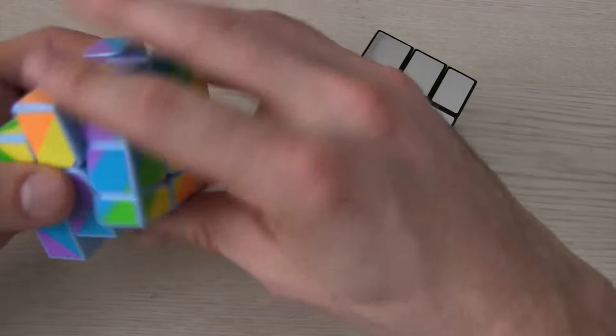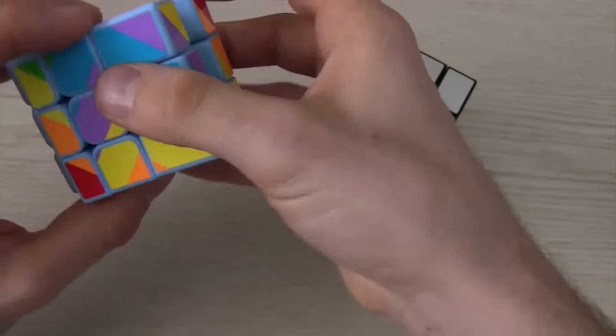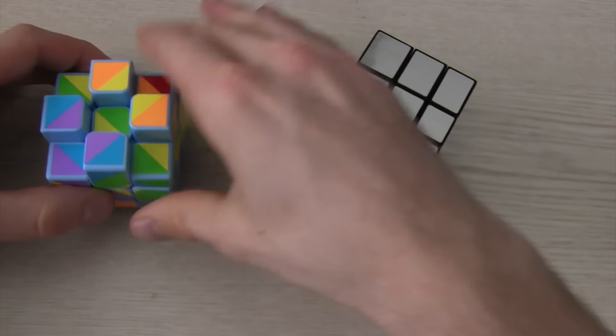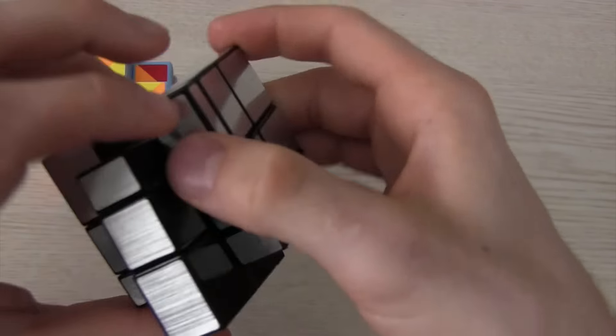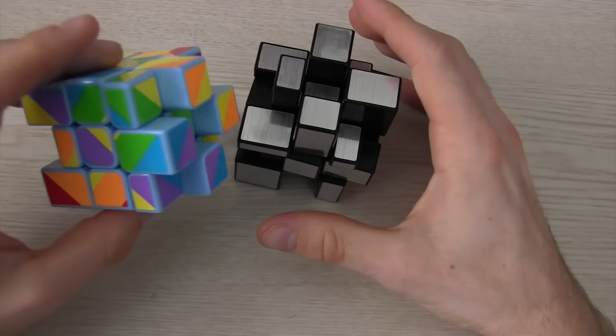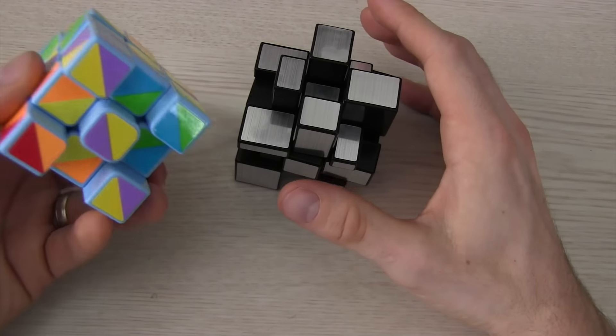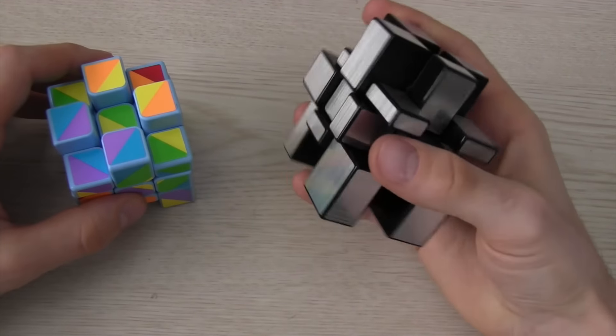So if we did, let's say, a checkerboard pattern with this, and we did a checkerboard pattern with this, here the top and bottom are different, but on the shangshu all the sides are different.